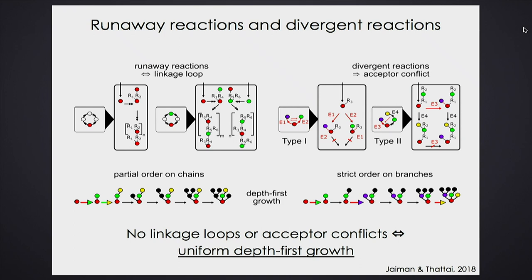If you remove loops, something very interesting happens. This little graph — which monomer is allowed to follow which monomer as you walk down a branch — if it has no loops, it's a directed acyclic graph, also known as a partial order. If this graph has no loops, then no matter which branch you go down, all will respect the partial order. If you remove these sources of diversity, two things happen: you always get depth-first growth, and the only kinds of enzymes you're allowed to have are those which can act when everything else has already grown from the same substrate.